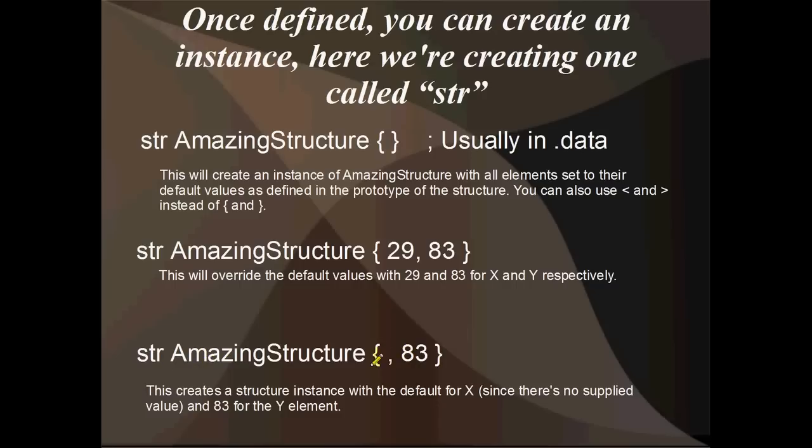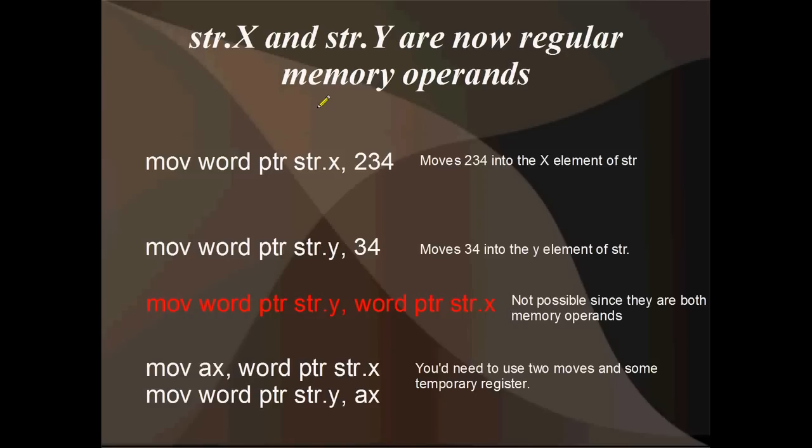If you don't want to override all of the values, like some of the values you want to leave to the defaults in the structure's definition, you can just leave a blank field. So right here I've got STR, AmazingStructure, and then I've just got a comma. So the X value here is blank, and MASM will use the default value from the structure's prototype. However, I have overridden Y just here, so Y would be overridden to 83 and STR.X would be whatever the structure had defined.